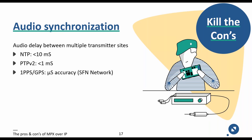The second method is PTP version 2 — precision time protocol version 2 — in accordance with RFC 8173. This is an advanced synchronization method offering less than one millisecond delta delay. The MPX over IP encoder generates a timing signal carried through the IP network to all MPX over IP decoders, and the IP switches and routers must be PTP version 2 compliant. The third method is GPS or 1PPS, which offers microsecond accuracy and allows the radio station to operate in a single frequency network mode. This requires a GPS clock generator at each transmitter station, and for real SFN operation the transmitter itself must also be GPS-synchronized.